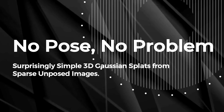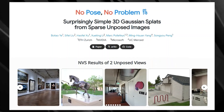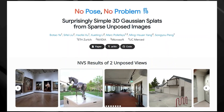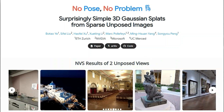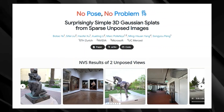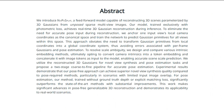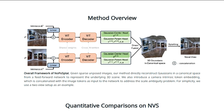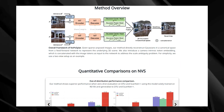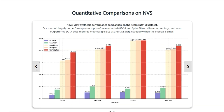Paper number three: No Pose, No Problem — surprisingly simple 3D Gaussian splats from sparse unposed images. Imagine creating a full 3D model of a room just from a few snapshots taken with your phone, without even worrying about carefully positioning your camera. That's exactly what No Pose Splat can do. This groundbreaking method lets you reconstruct 3D scenes from unposed images, meaning you don't need to know the exact camera position for each picture. No Pose Splat uses a clever approach called 3D Gaussian splats, taking your unposed images and directly generating a 3D model represented by these Gaussian blobs. It cleverly avoids the need for precise camera positions by anchoring one image as a reference point and reconstructing the entire scene relative to that image's viewpoint.